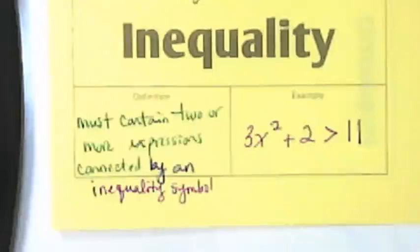An example would be 3x squared plus 2. This is an expression. 11 is also an expression. Greater than, that's our inequality symbol.